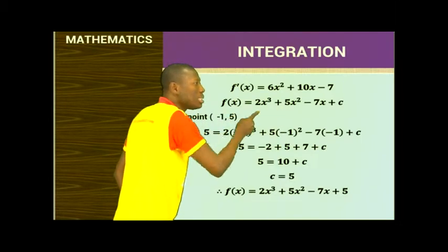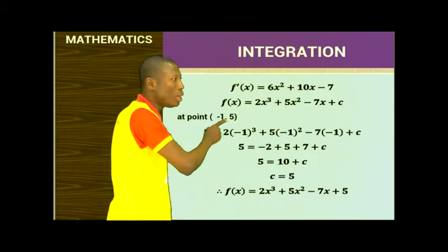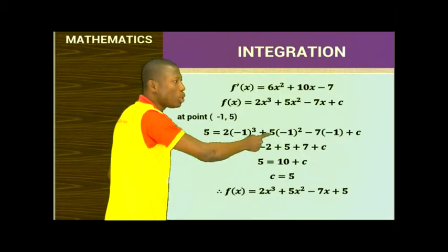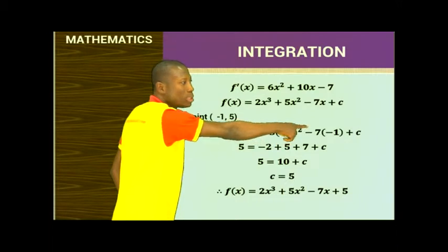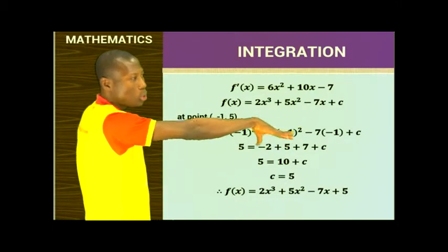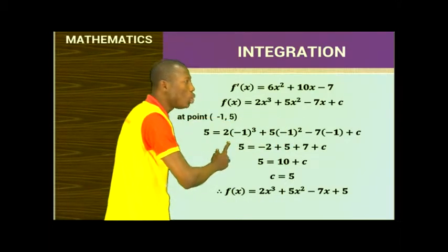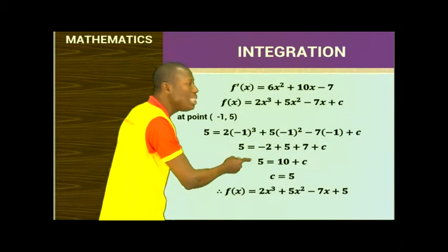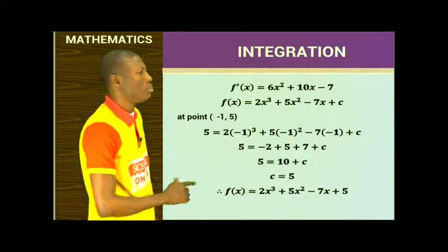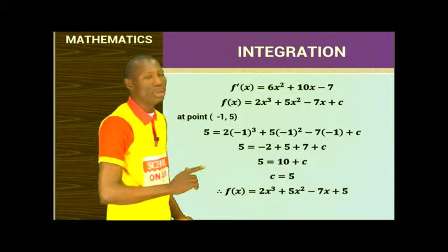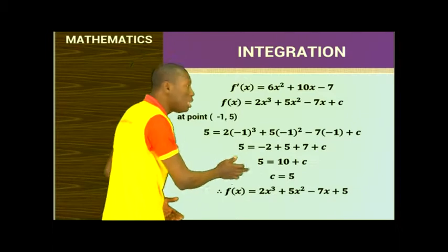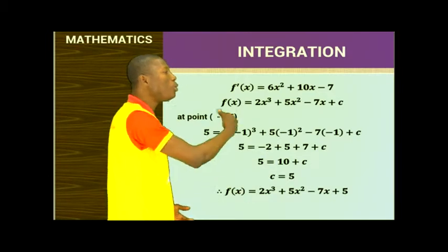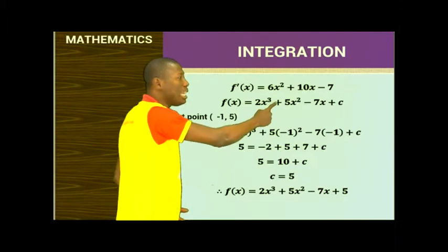So f(x) equals 5 and x equals -1. I put: 5 equals 2(-1) cubed plus 5(-1) squared minus 7(-1) plus C. That gives 5 equals -2 plus 5 plus 7 plus C, so C equals 5 minus 10, which equals -5. Putting -5 back gives us our complete equation.